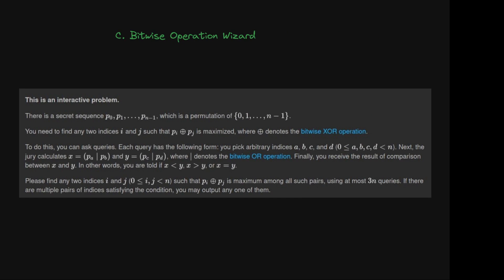Problem statement. This is an interactive problem. There is a secret sequence p0, p1 up to p(n-1) which is a permutation of 0, 1 up to n-1. You need to find any two indexes i and j such that the bitwise OR of p[i] and p[j] is maximized. To do this, you can ask queries. Each query has the following form.